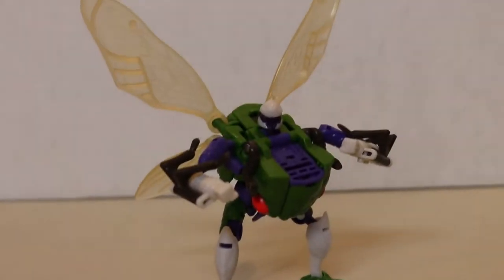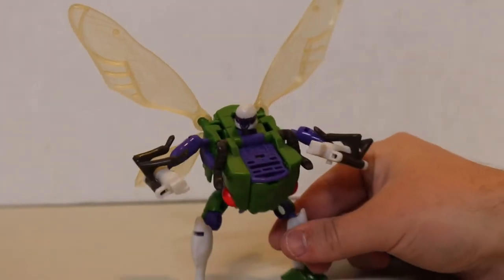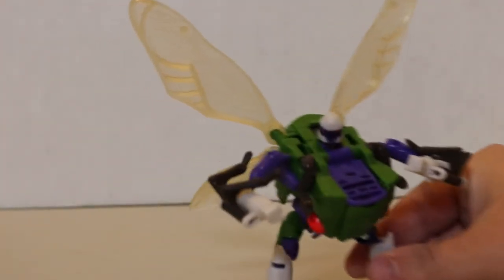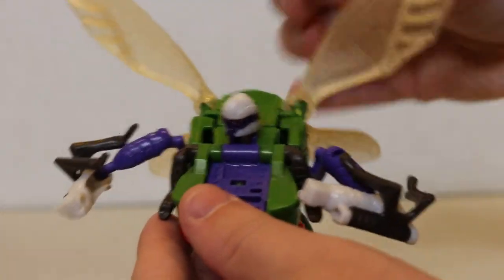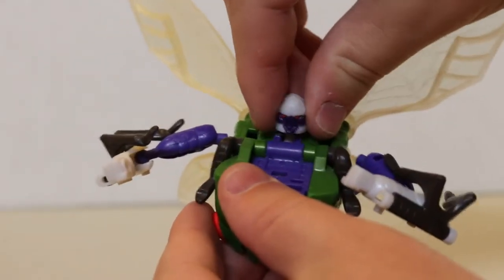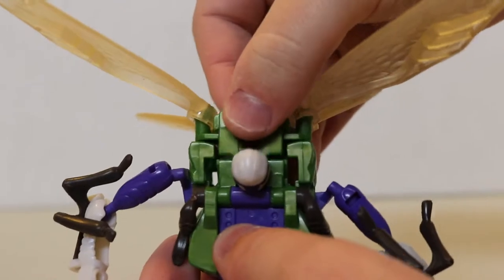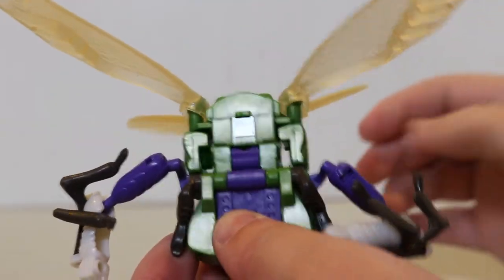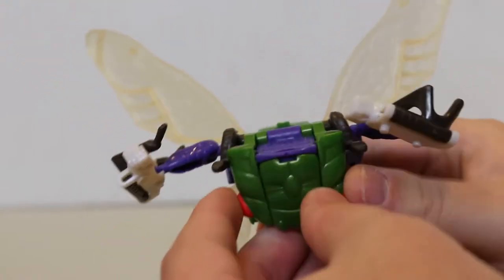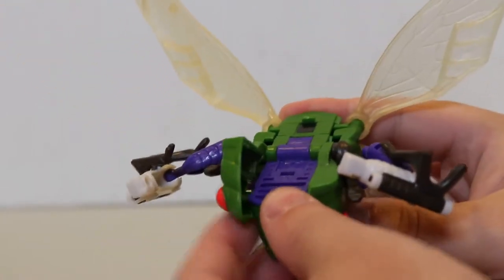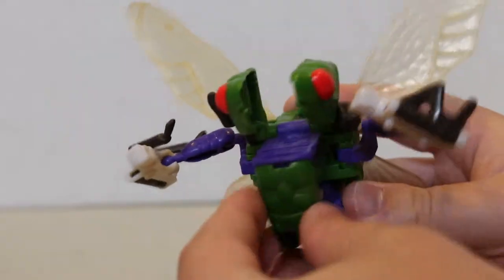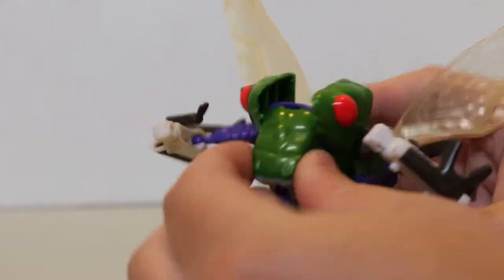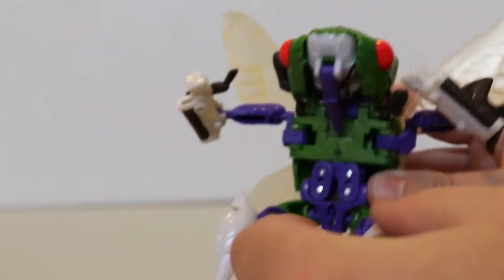Next piece we have Cicadacon. Cicadacon will then become the torso. Straighten out his head, flip this piece back, retract his head. And there. Now we want to flip these pieces up, like this, and along with this center piece, and flip this piece up like that.